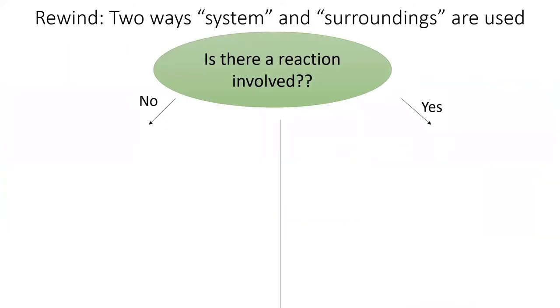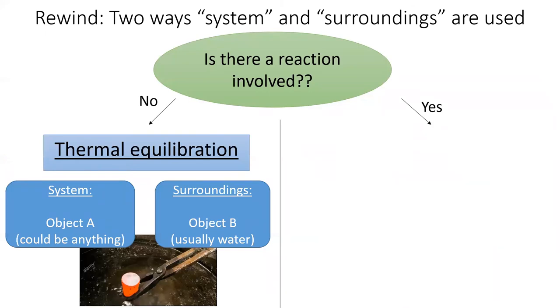But before we practice these two types of calorimetry problems, we want to know, how do we tell which one we're dealing with? Well, ask yourself the question, is a reaction involved? If there is no reaction involved, then we are likely dealing with a thermal equilibration problem. These problems usually take the form of a hot thing was added to a cold thing. The hot thing cooled down. The cold thing warmed up. Calculate the final temperature of the things. In this kind of process, the system is one object and the surroundings are the other object. The heat comes from the hot object and flows to the cold object until both objects reach the same temperature. Because water is so good at absorbing heat, it's often involved in these problems and you usually consider it as the surroundings. But the distinction is somewhat arbitrary.